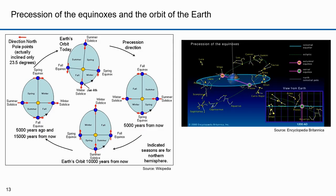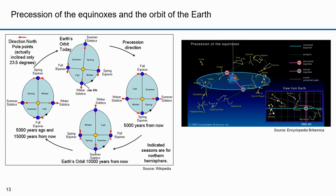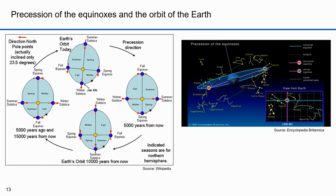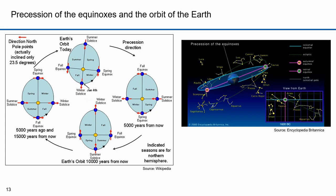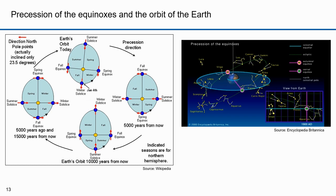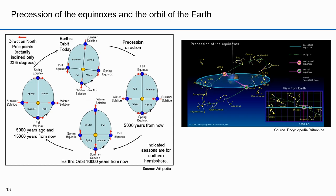Because of something called apsidal precession, the earth's closest point slowly rotates counterclockwise. It takes about 134,000 years for the closest point to revolve once. Hipparchus also figured out that the solstices and equinoxes precess with a period of about 25,771 years. With these two forms of precession, it takes about 21,600 years for the closest point to rotate once — that's when the closest point will return to the same date.